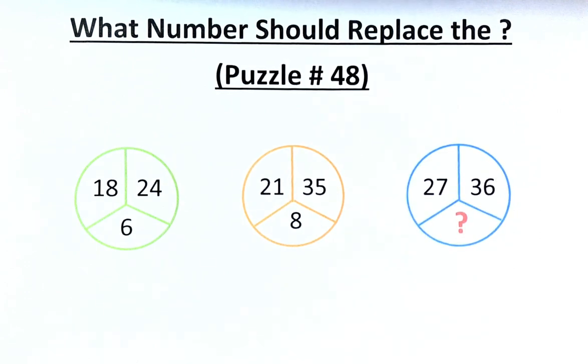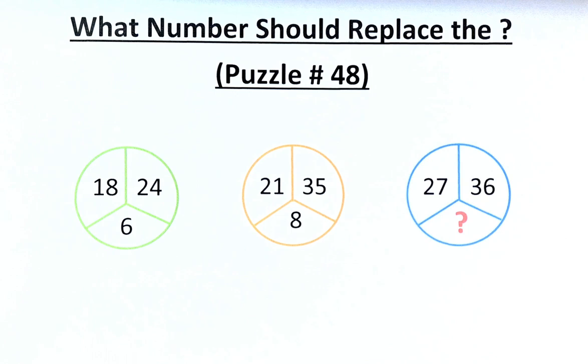35 equals 8, and in the blue circle 27, 36 equals the question mark. Have you managed to solve this puzzle? If you have, well done because this is one of the more difficult puzzles in my repertoire.